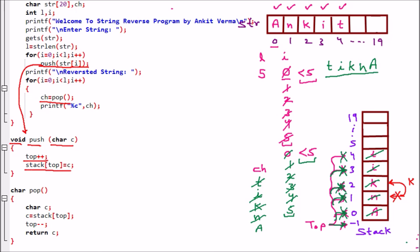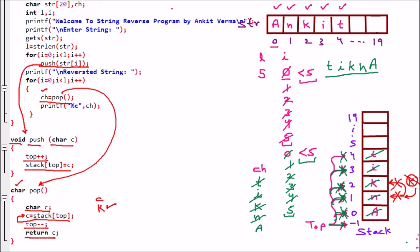For the pop function, it has a return type of char. Inside, we take char c, assign c = stack[top] — so the top element (for example 'K') is stored in c. Then top-- decrements the top pointer back to the previous position. Finally, return c sends the popped character back to the calling program. This is how the push and pop functions work, completing the program to reverse a string using a stack.